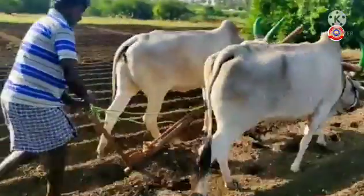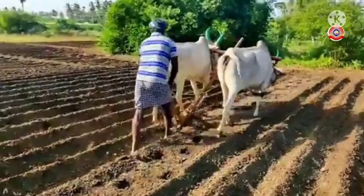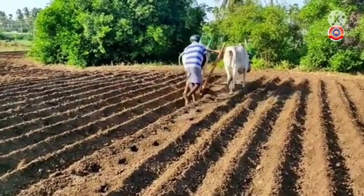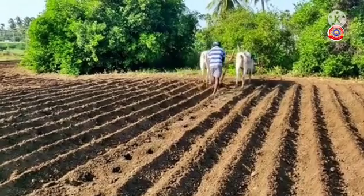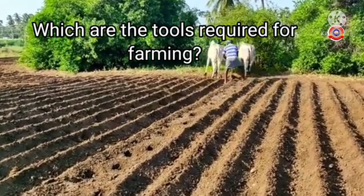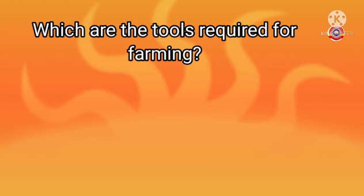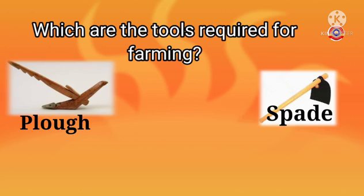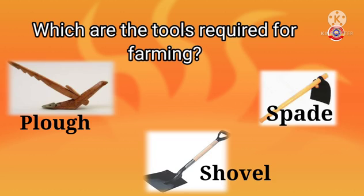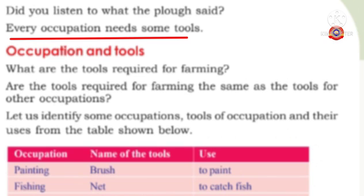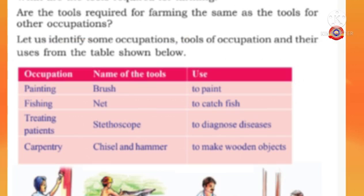Dear children, now we know that the plough is one of the tools used in farming. Do you know which are the other tools required for farming? Plough, spade, shovel, etc. are the tools required for farming. Like farming, every occupation needs some tools. So let's discuss some tools that are needed for different occupations.